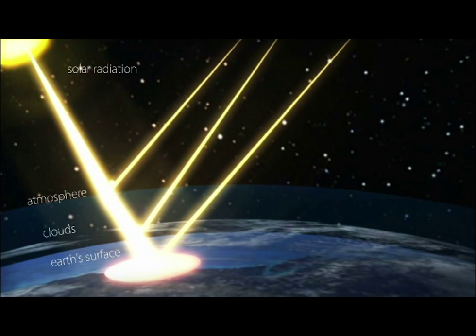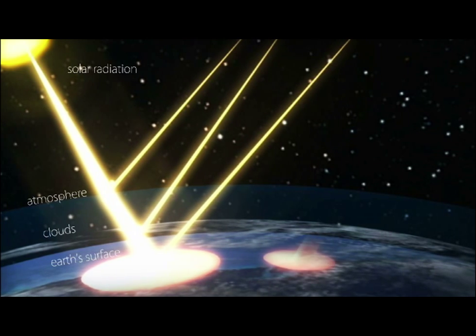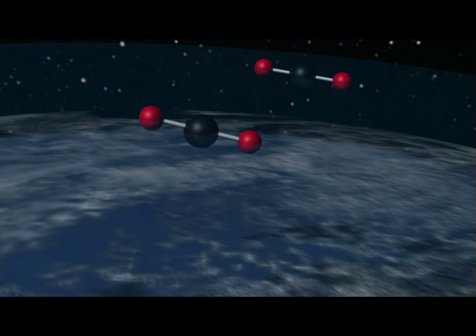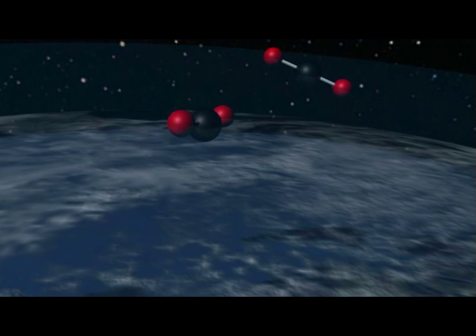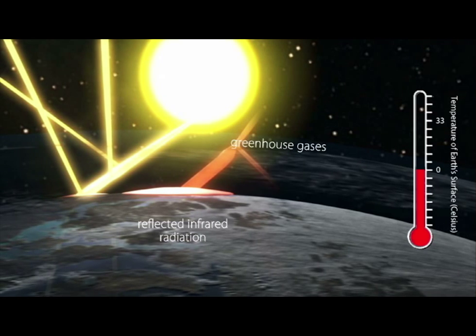The heat of the Earth is lost as longer wavelength infrared radiation. Greenhouse gases, including carbon dioxide and water, absorb this lower energy radiation. They bend and stretch, re-emitting the infrared radiation in all directions. Some of the re-emitted energy comes straight back to Earth.